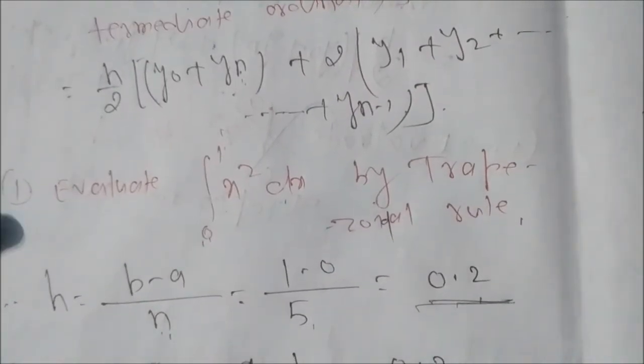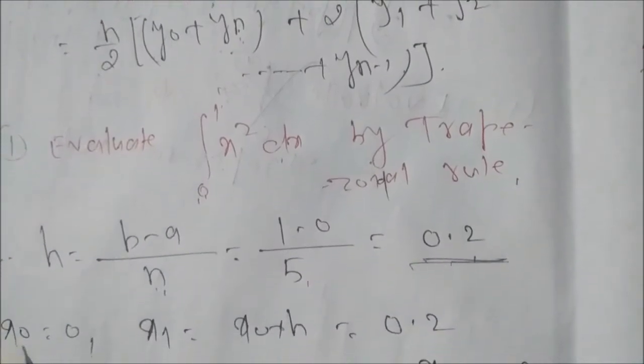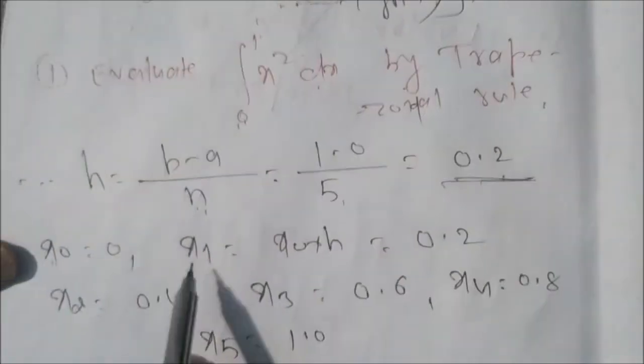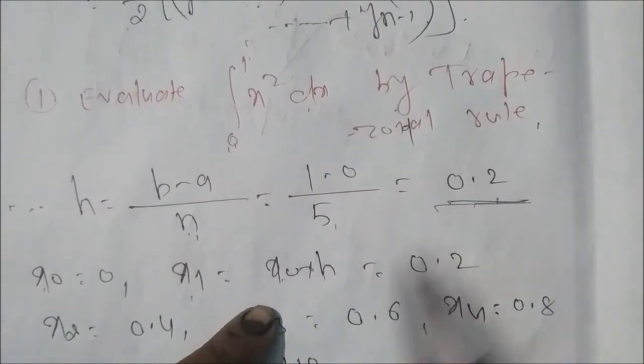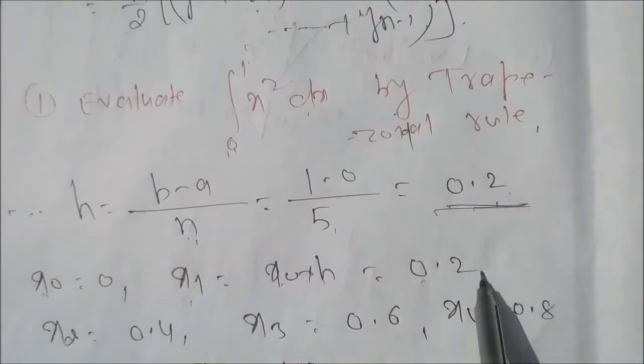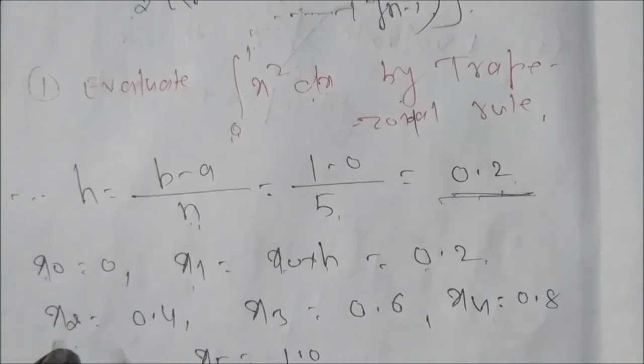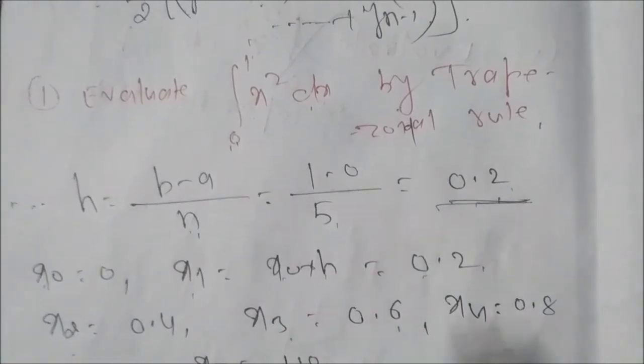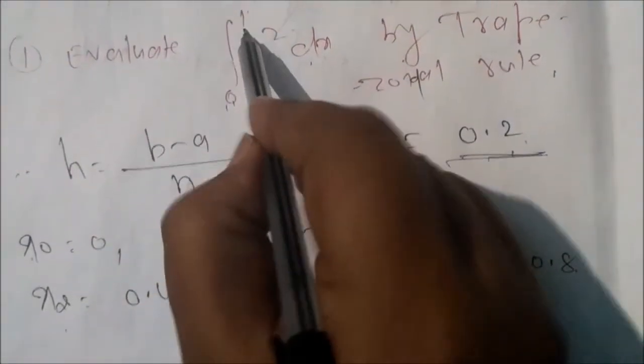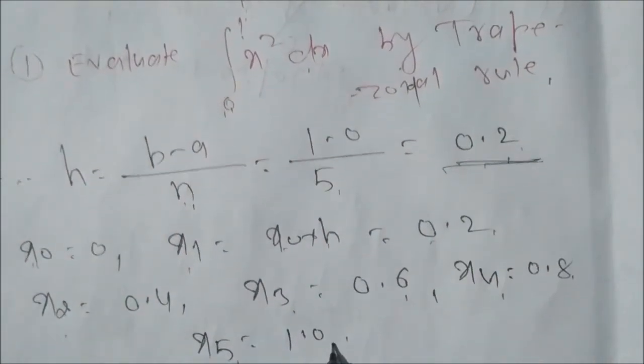First of all you find h, then x0 is 0, x1 equal to x0 plus h that is 0.2, similarly x2 equal to x0 plus 2h that is 0.4, x3 is 0.6, x4 is 0.8, x5 is 1.0. Last value is 1, upper limit x5 is 1.0.